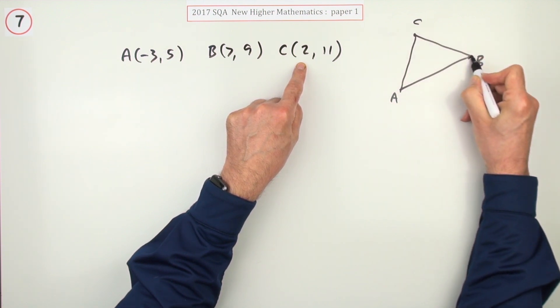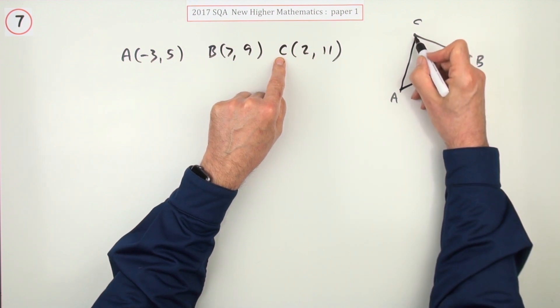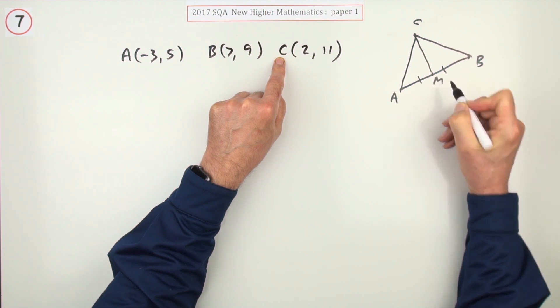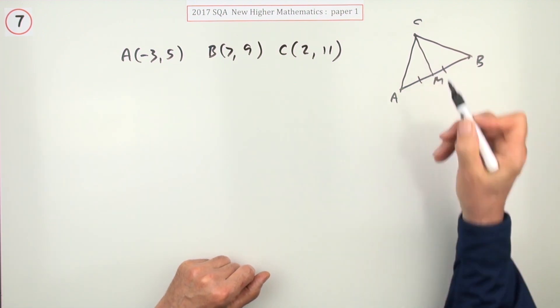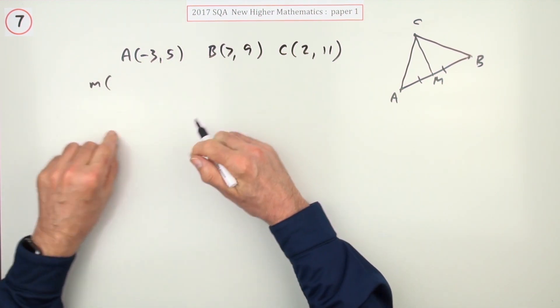Not that it matters because I only want to know what goes from where. The median through C means going through C to the middle of the opposite side. So I need to hit that in the middle. To get the equation of this line, I'll need that midpoint. What's halfway between these two?